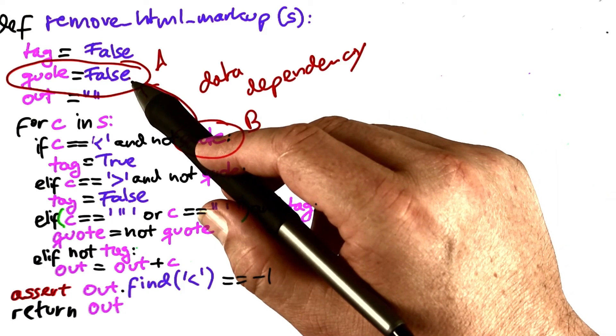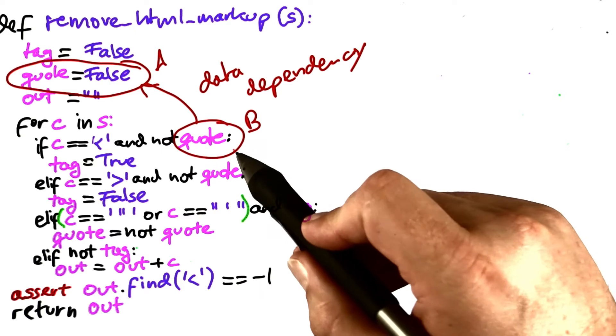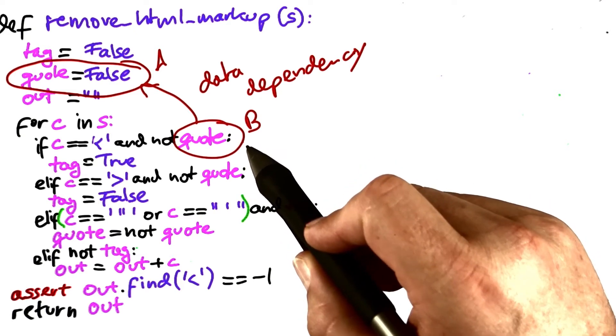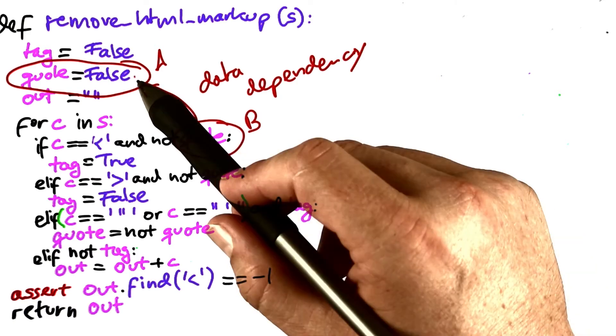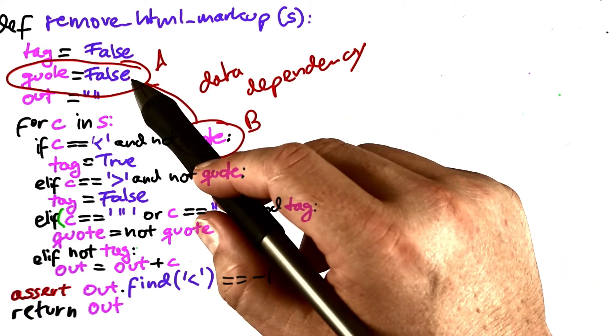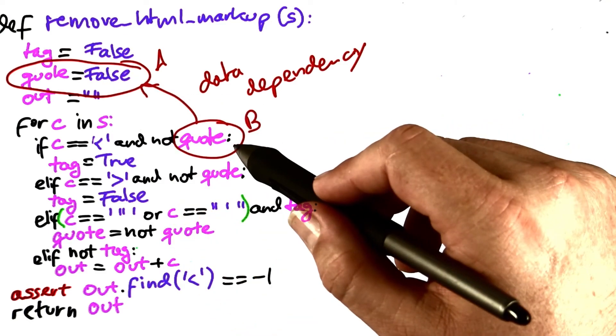Therefore, the statement A up here sets the state that B later on keeps on processing. If we want to understand how B behaves, we follow the data dependencies to A and find that this is one of the statements that sets the state that B depends upon.